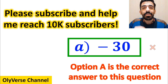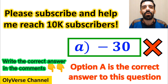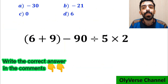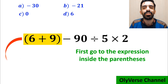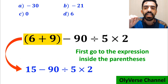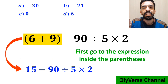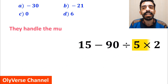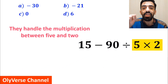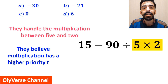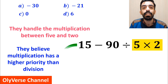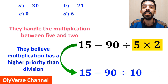However, this answer is absolutely wrong. Also, some other people when solving this question first go to the expression in parenthesis, and write this expression as 15 minus 90, divided by 5, times 2. In the next step, they first handle the multiplication between 5 and 2, because they believe multiplication has a higher priority than division. So they rewrite this expression as 15 minus 90, divided by 10.